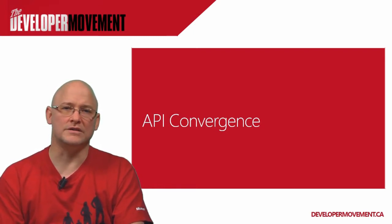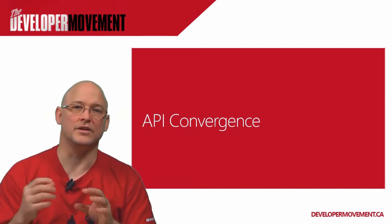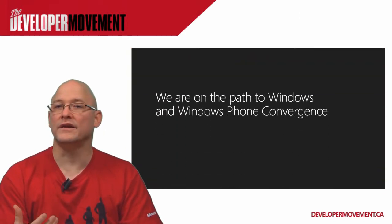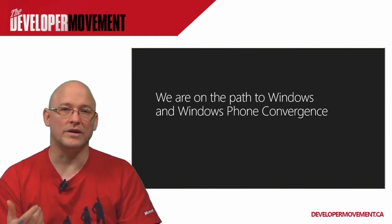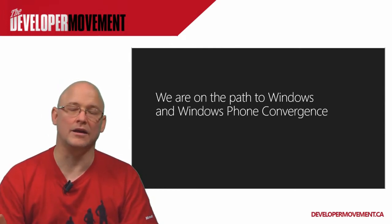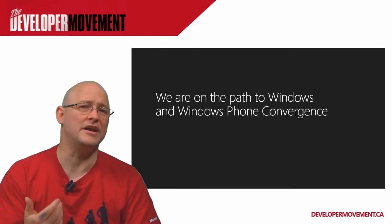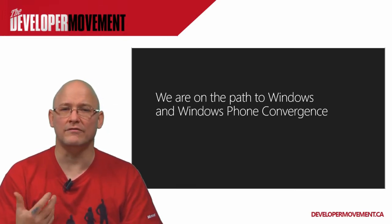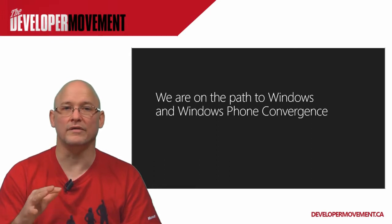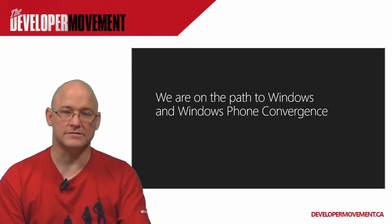One of the greatest things that allows us to work across platforms is API convergence. There are a lot of shared components in both Windows 8 and Windows Phone. The new Windows Phone 8 uses the same API kernel as Windows 8, which is fantastic from both a technological and project management perspective. They started at the kernel and are making more and more things work the same way on both platforms.